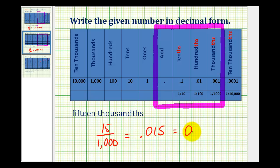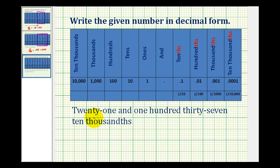If we want to have a zero in the ones place value, that would be okay too. Let's take a look at one more example. Here we have twenty-one and one hundred thirty-seven ten-thousandths. The word 'and' represents the decimal. So for this number, we're going to have digits to the right and left of the decimal.